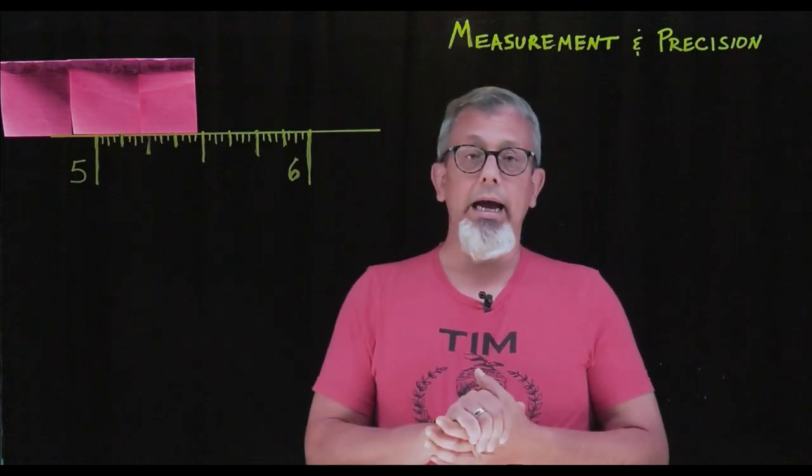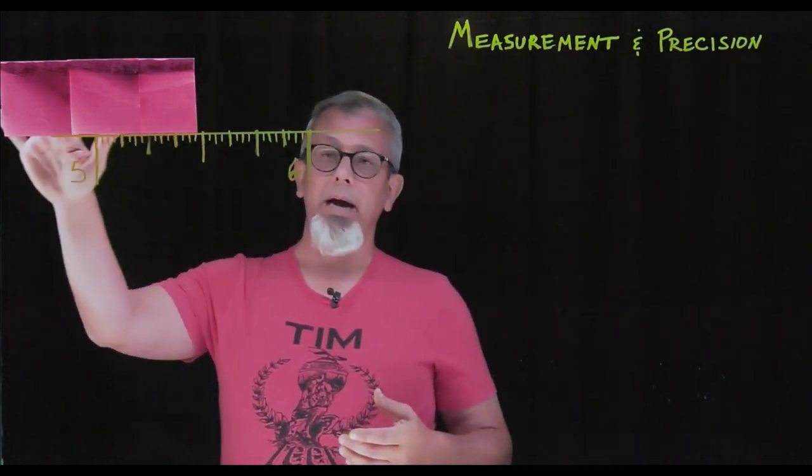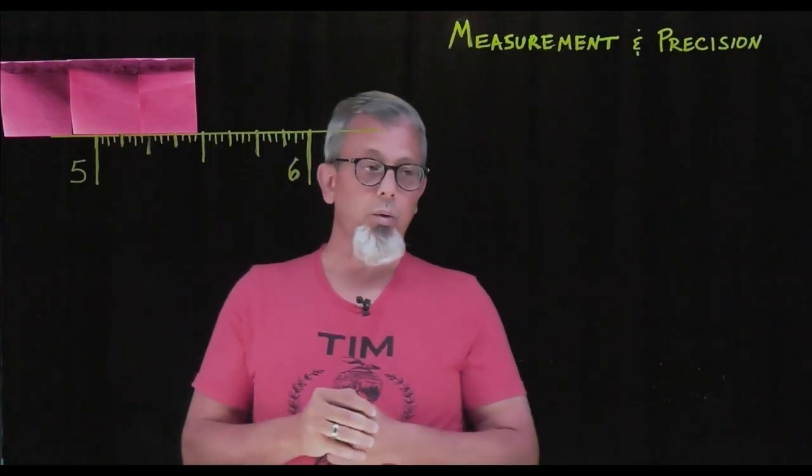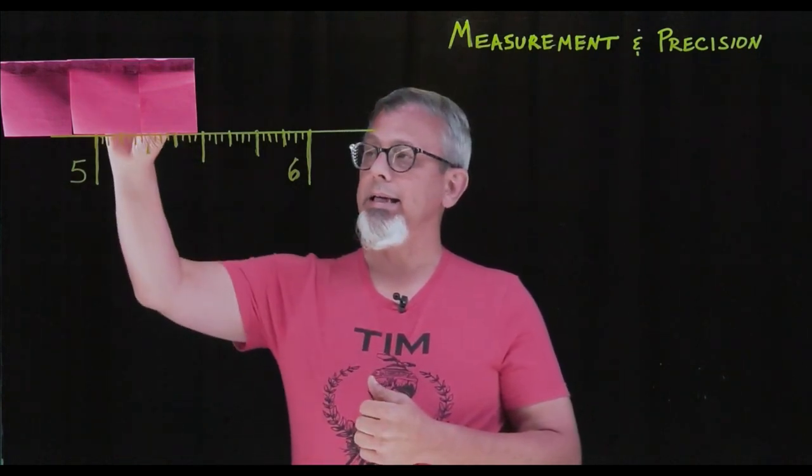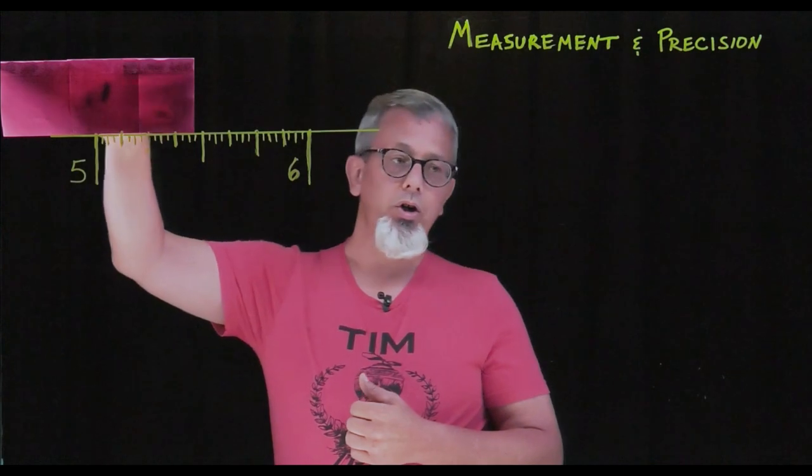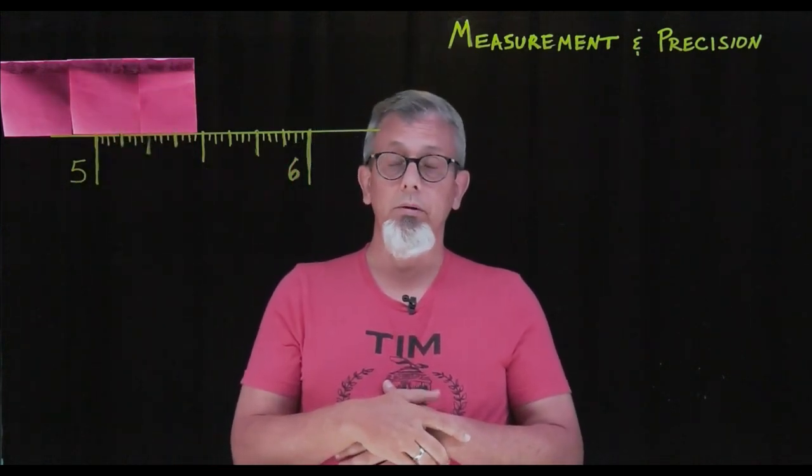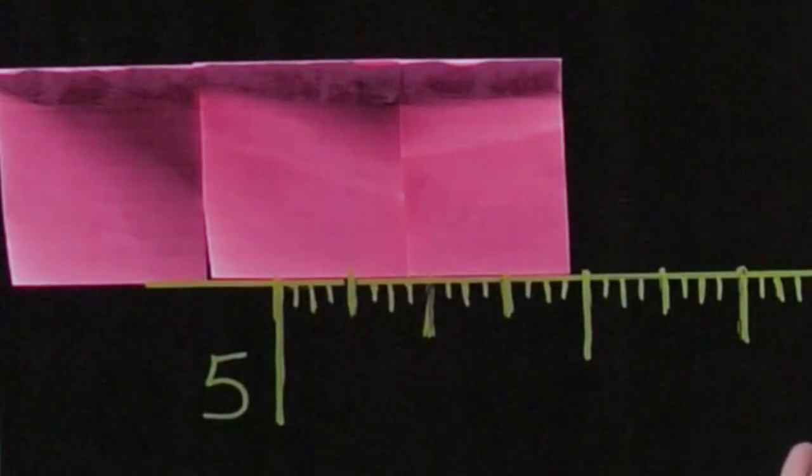Over here to the side I have something that I'm measuring represented by this pink section here, and I have a scale that we're going to measure with. We're going to look carefully at that scale, and I want you to do the best that you can to estimate a measurement value for the length of this pink piece, assuming of course that it extends off the edge down to zero and it's lined up with zero. How long is this pink piece of material?